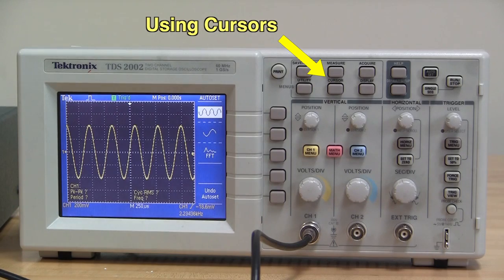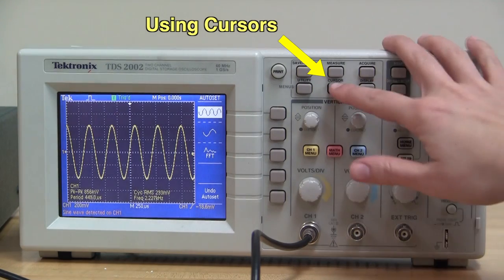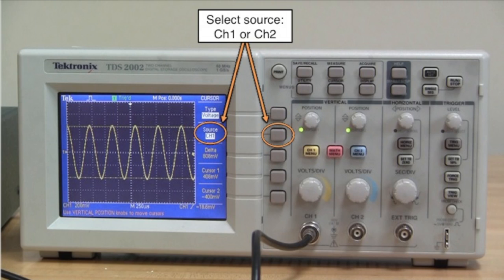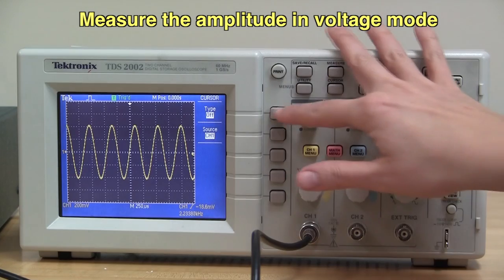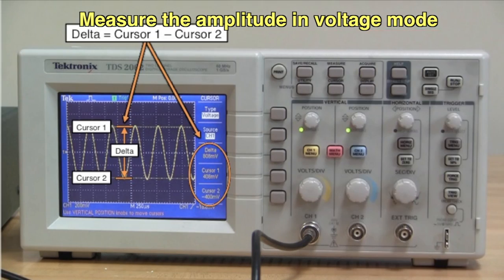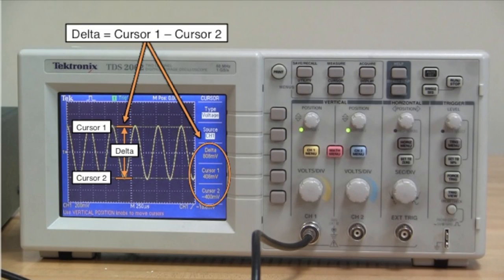You can also use cursors to directly measure the amplitude and period of the wave. First select the cursor type, voltage or time, and then select the input source, either channel 1 or channel 2. Turn the position dials to change the position of each cursor. The positions of cursor 1 and cursor 2, and the difference between these positions delta, is shown on the right-hand side of the oscilloscope screen.